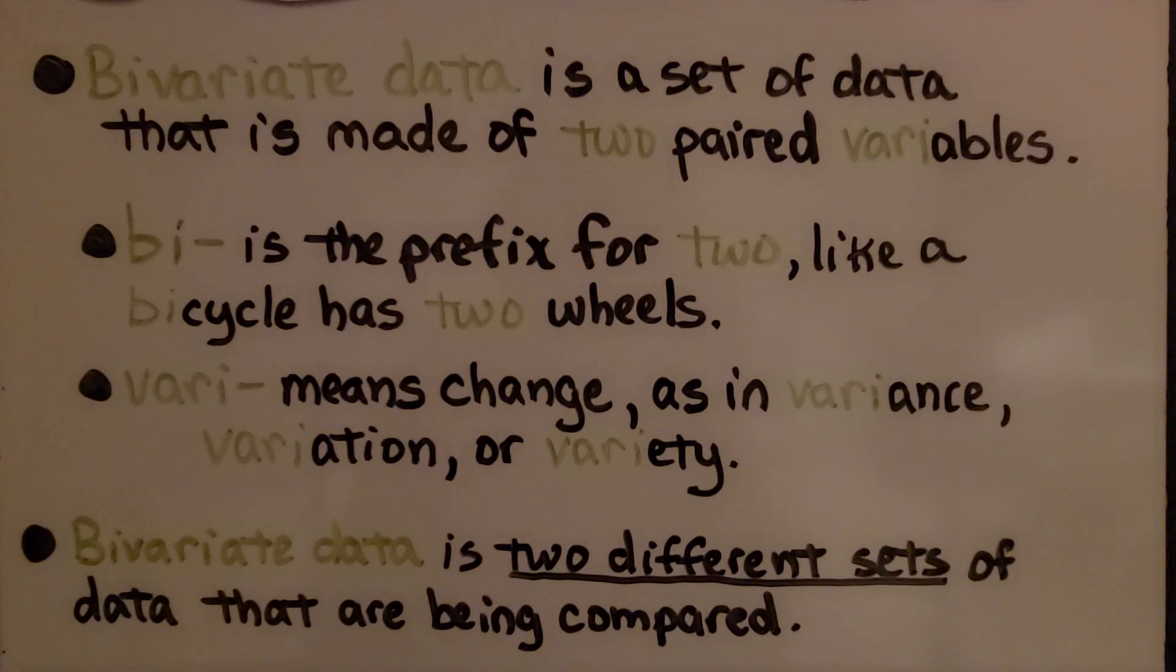Bivariate data is a set of data that is made of two paired variables. Bi is the prefix for two, like bicycle has two wheels.